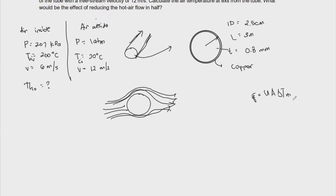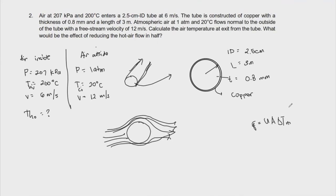So basically, our log-mean temperature difference cannot be said to be counter-current or co-current, because one of the things is that it's a cross-flow. And second, we are not within the type of heat exchanger we know, so we can't correlate it regarding our correction factor Ft.